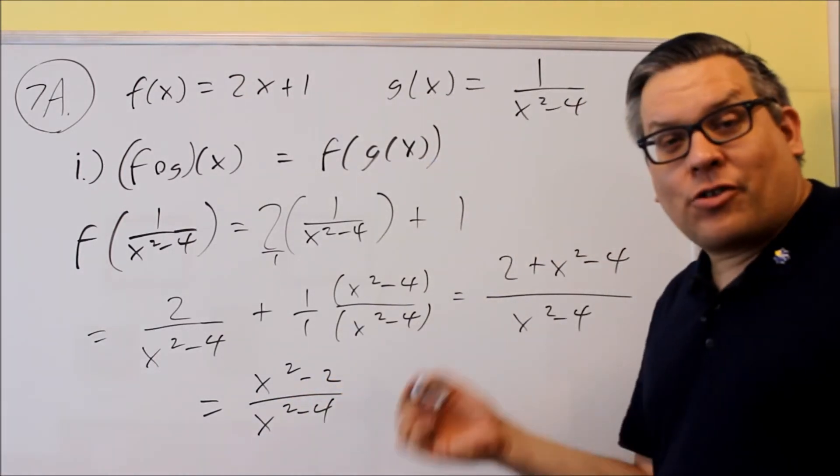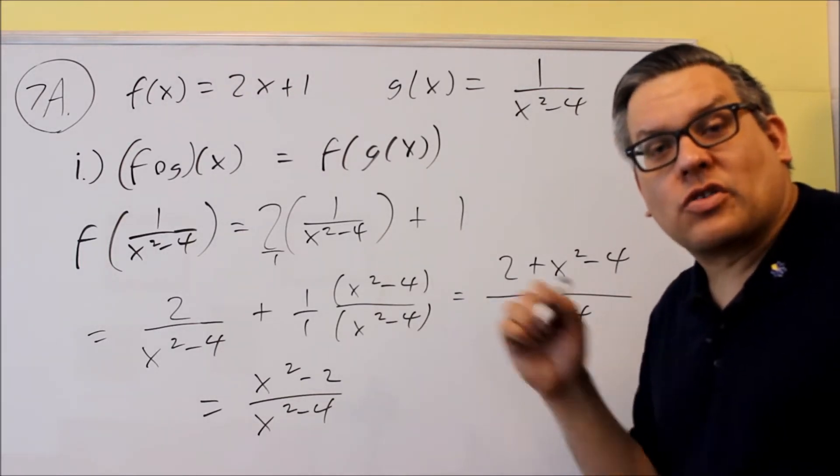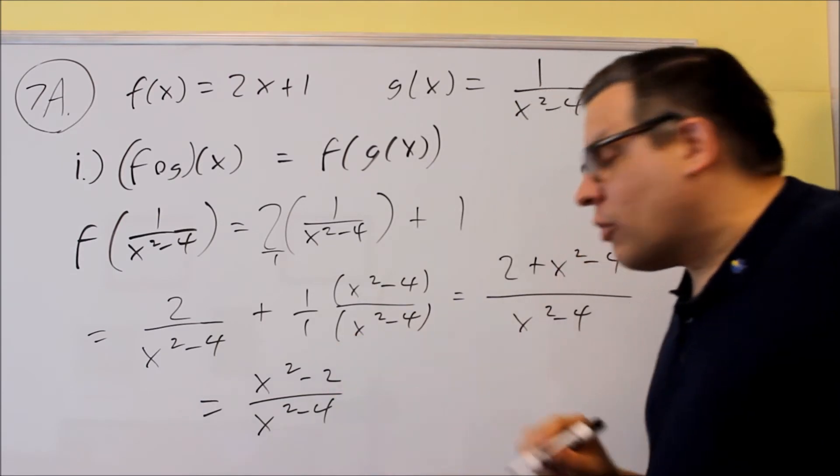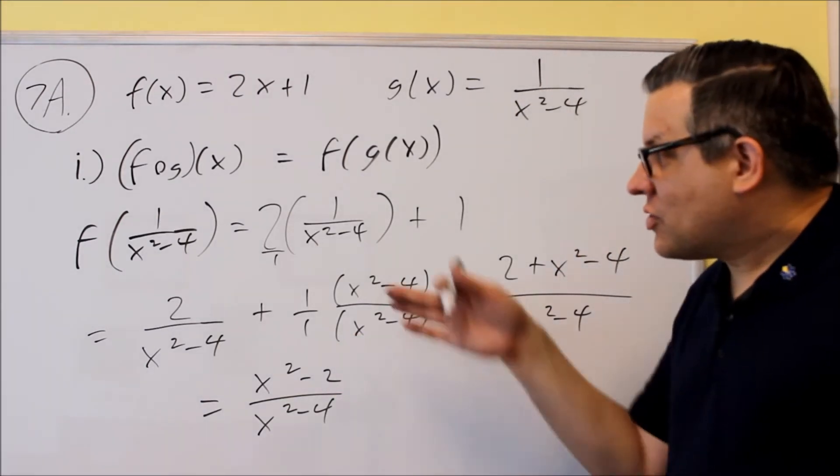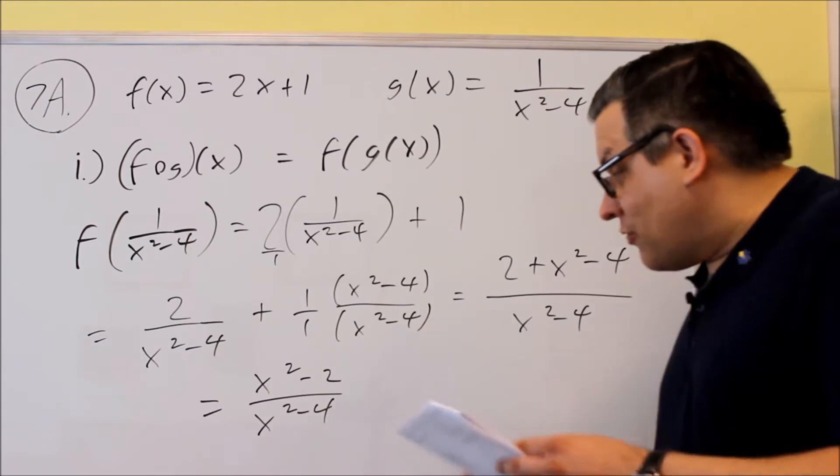Don't worry about factoring it, unless it tells you specifically to do so. This one didn't specify. All it said was, write as a single fraction. That's exactly what we have here, is a single fraction. So this is the answer for i, x squared minus 2, x squared minus 4.